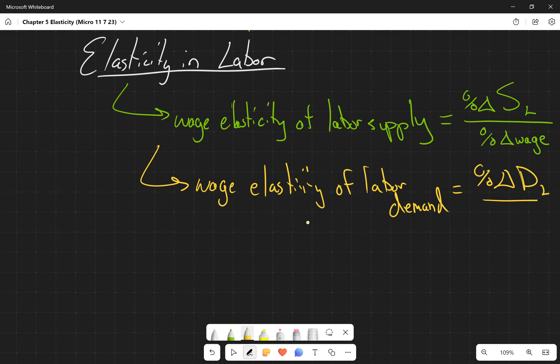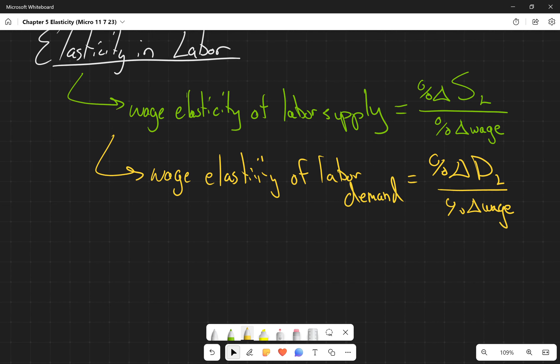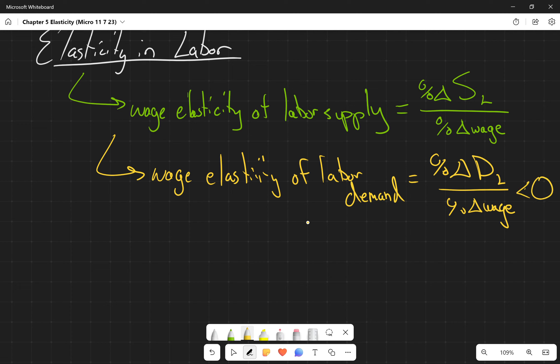And so we know that this is going to be a negative number because of our law of demand. We know that as wages increase, firms are going to demand less of them.